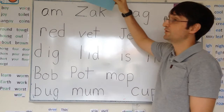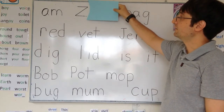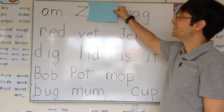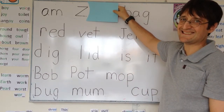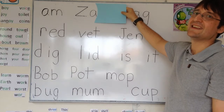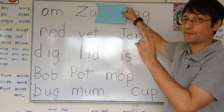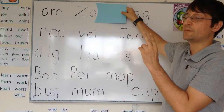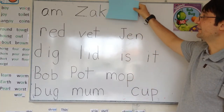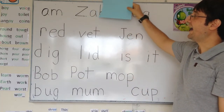Let's do the next word. Remember, we cover, revealing only the first letter, and make the sound. Zzz. Then A. Now we've blended the first two and we have Z. So we're going to add the third letter — C. Zzzz.